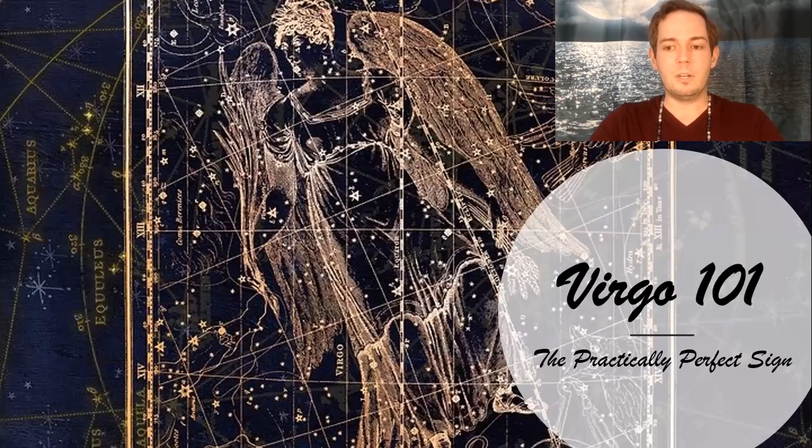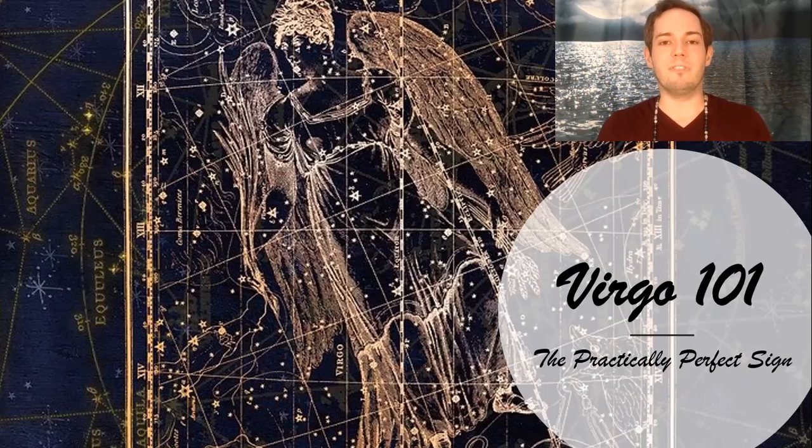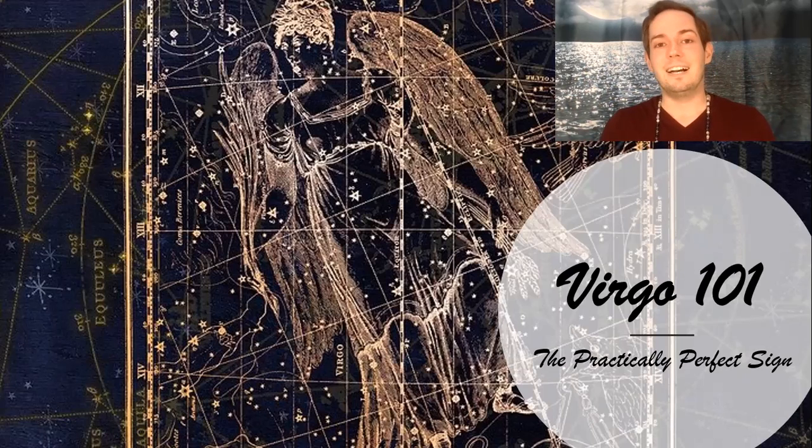When we look at Virgo, I always think of Mary Poppins. It's just something that is in my head when I think of the energy of Virgo, the attributes of Virgo. One of the things that Mary Poppins is, is she is practically perfect.